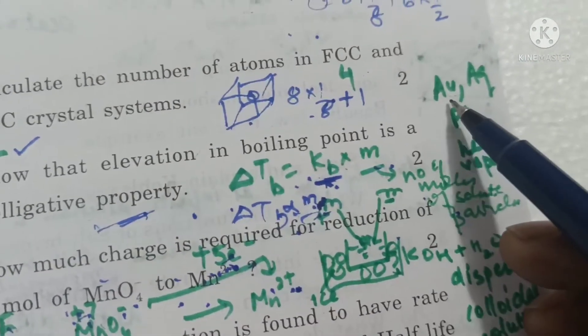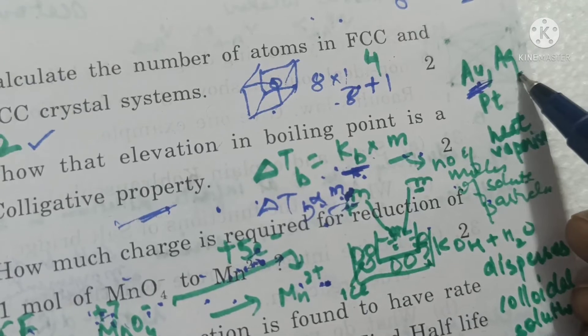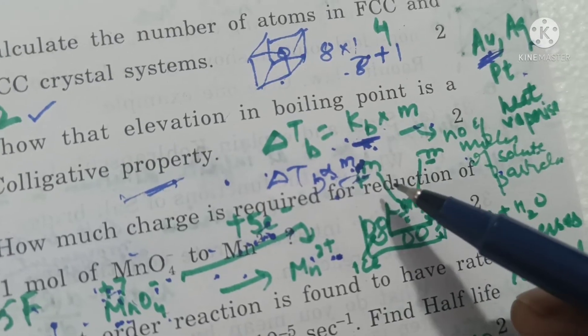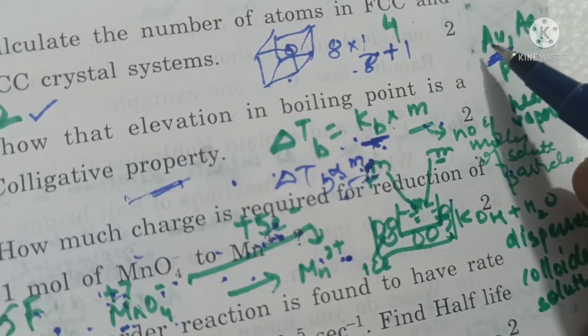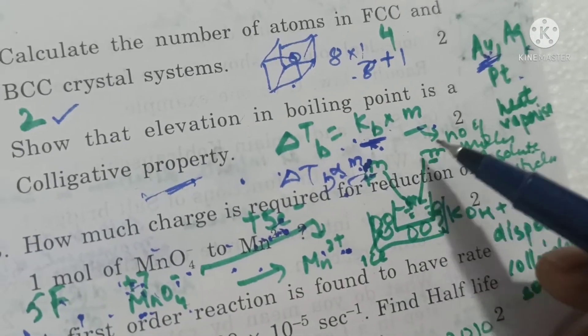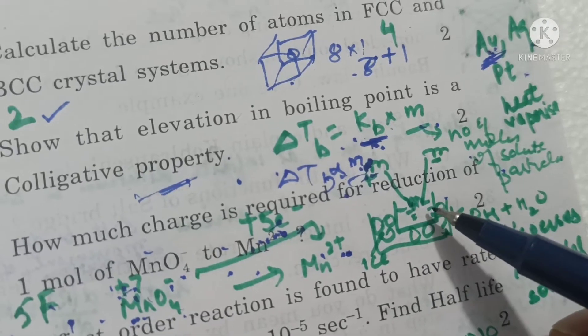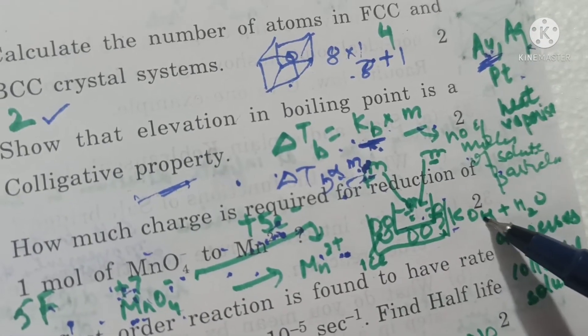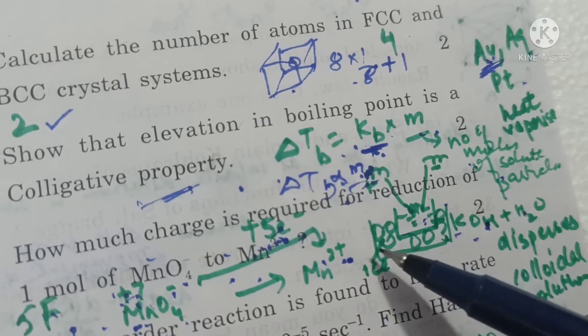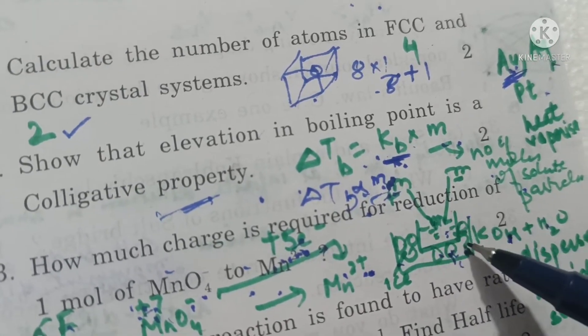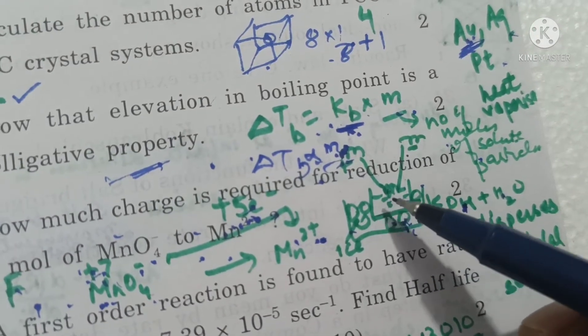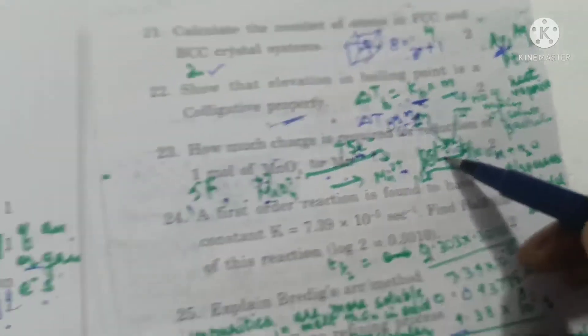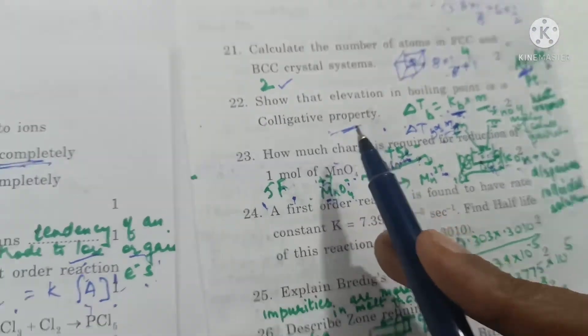Explain Bredig's arc method to prepare colloidal sols of gold or silver or platinum. We take the metal rod of which the colloidal solution is to be formed. For example, if we have to form gold colloidal solution, we will take gold rod and we strike an electric arc between them. The gold gets vaporized and as we have put potassium hydroxide which is a stabilizer and water which is cooled by ice, this ice cooled water solution will convert the vaporized gold into a colloidal sol.